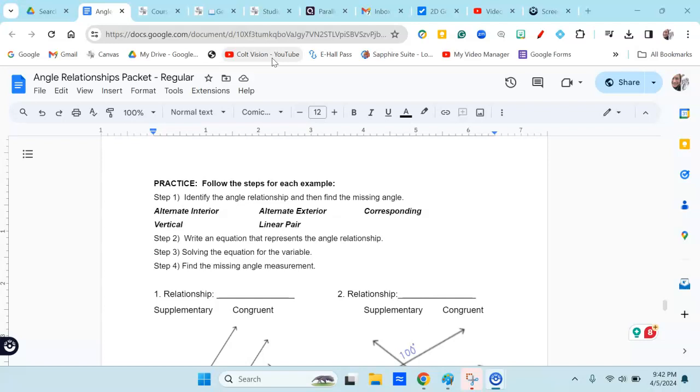Then step two, you're going to decide whether that is a supplementary relationship or a congruent relationship. Supplementary means they add up to 180 degrees. If they're congruent, that means the angles are equal in measure. Then after you've written the equation, you will solve it and find the missing angle.